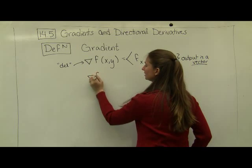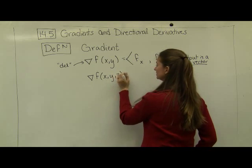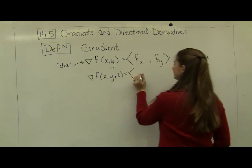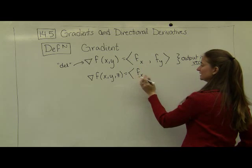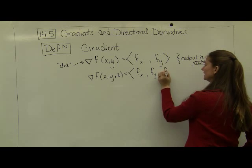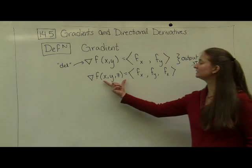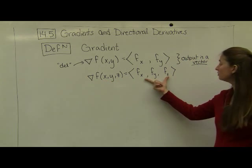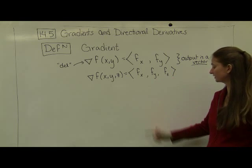We can also take gradients of functions that have more than two variables. So here's a three variable function. And my gradient is exactly what you might expect. It's the partial with respect to x in the x component, the partial with respect to y in the y component, and the partial with respect to z in the z component. Again, my inputs here are in R3, they're points. And my outputs are vectors that have three components, three dimensional vectors.